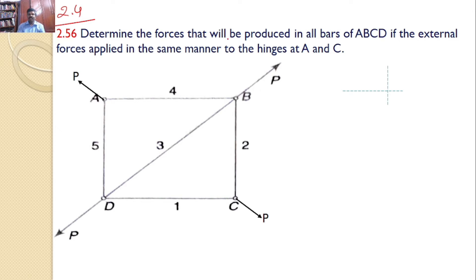Determine the forces that will be produced in all bars of ABCD if the external force applied in the same manner to the hinges at A and C. At A and C, we have a force like this. That means this angle is 45 and this angle is also equals to 45.